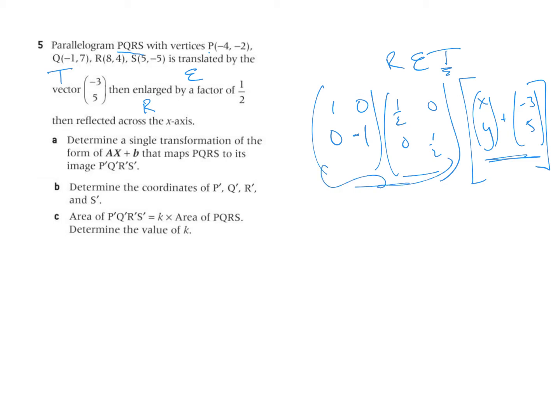So when I multiply this, these two here end up simply being just a half, zero, zero, negative a half, times x minus three, y plus five.